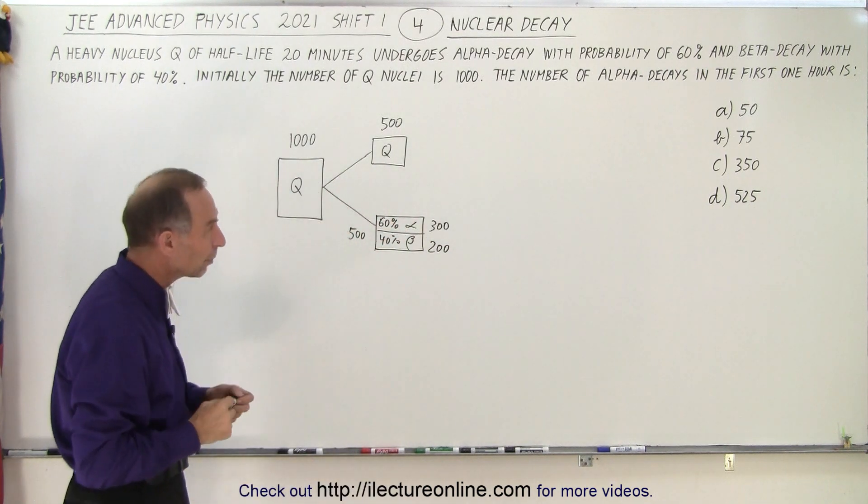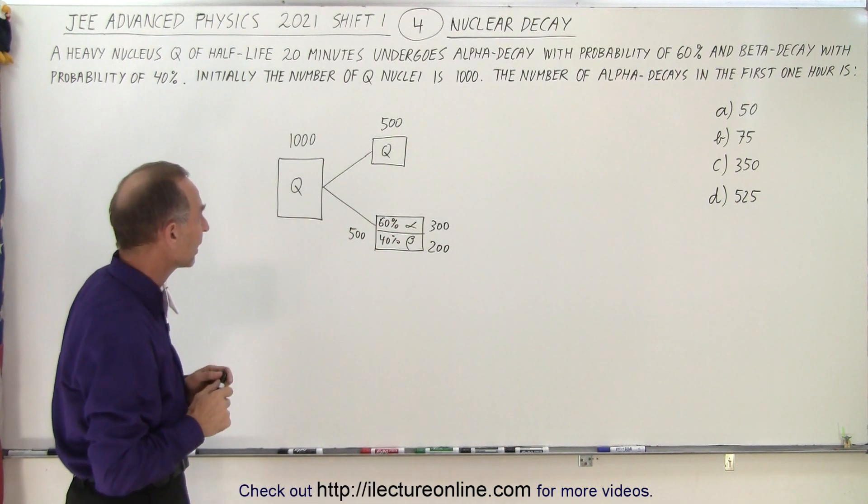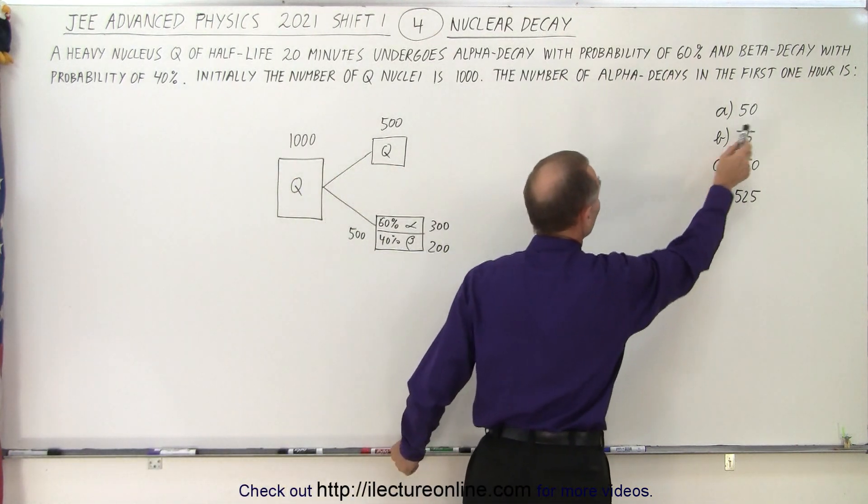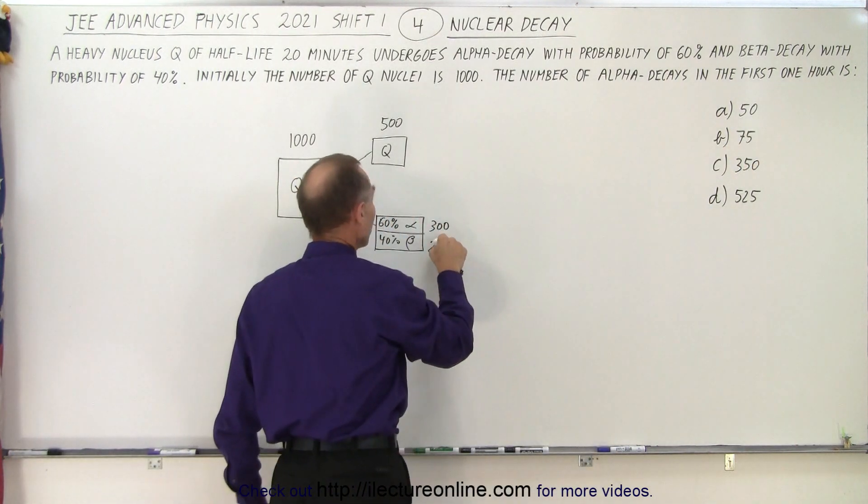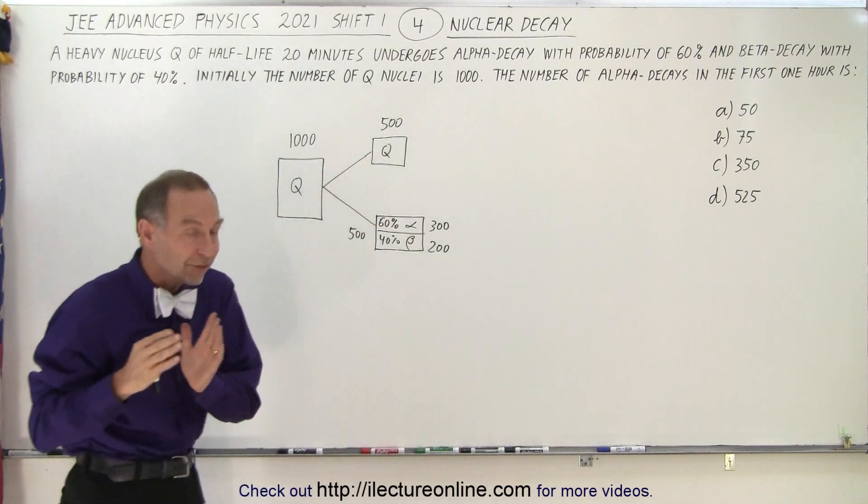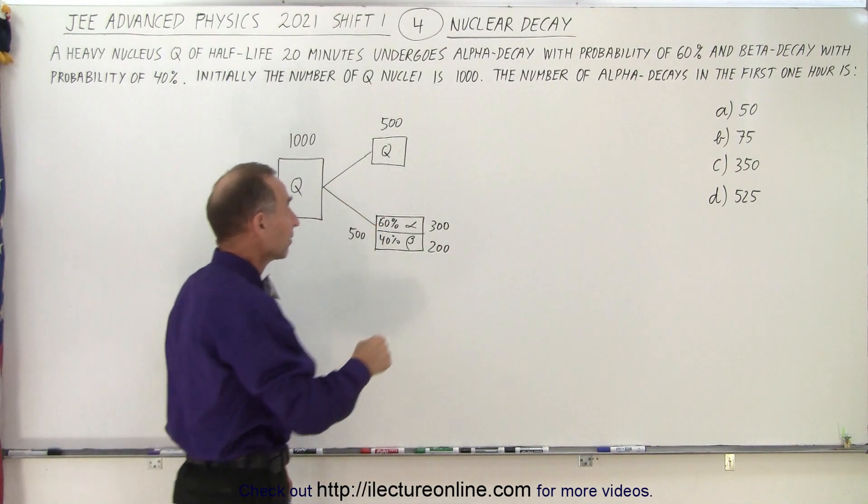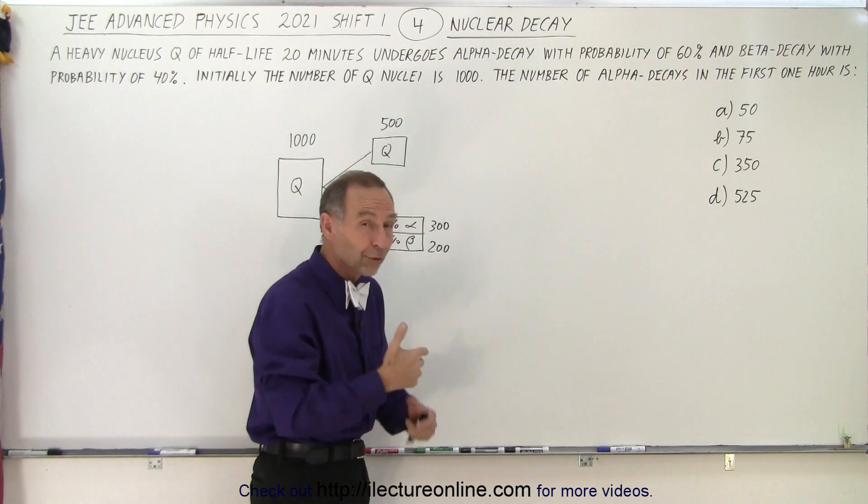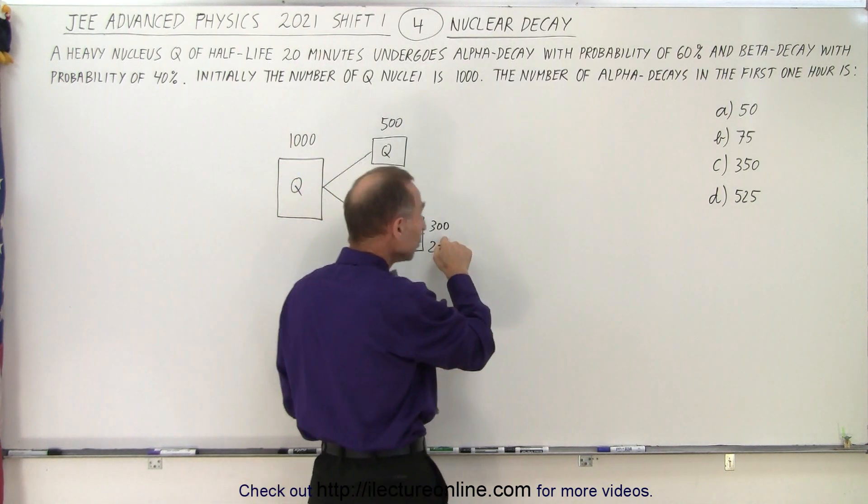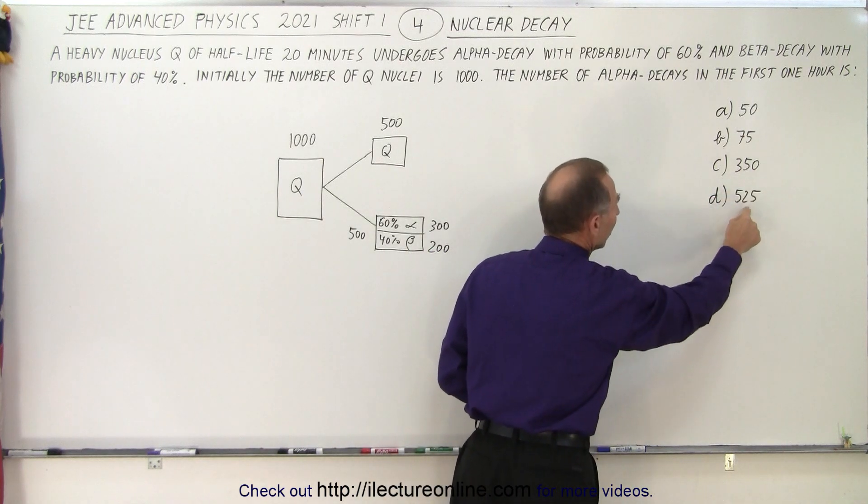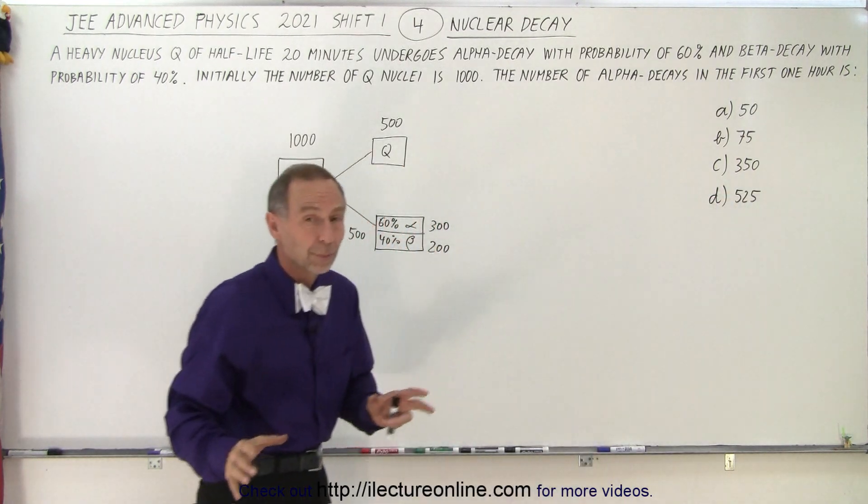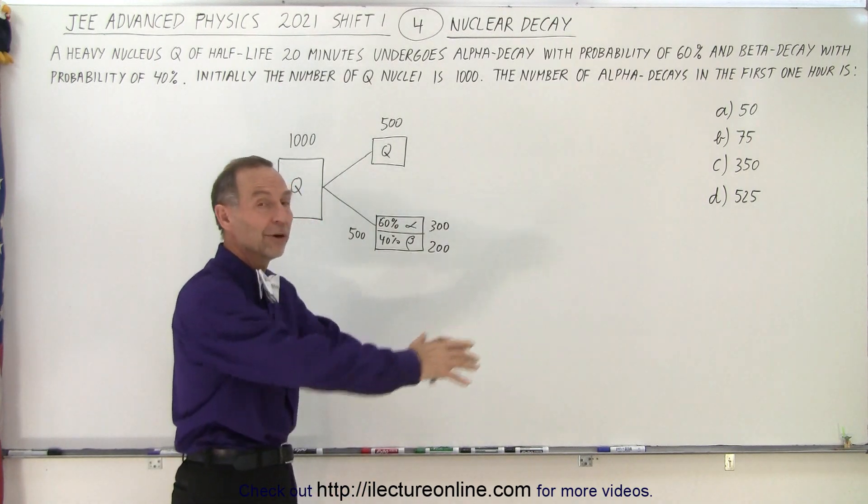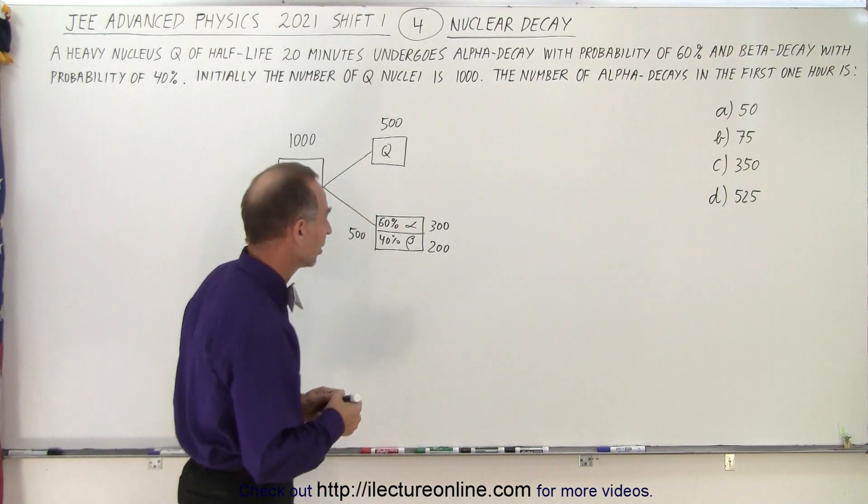At this point we can probably stop because it already eliminates answers A and B, since both are less than the number of alpha decays after just a single half-life. If after a single half-life I already have 300 alpha decays, then after three half-lives I would have way more than 350, so D is the more likely answer. If you're pressed for time I would circle D and move on. But let's keep going.